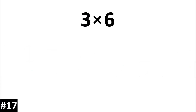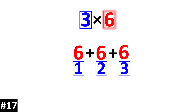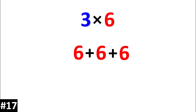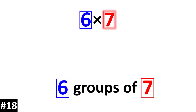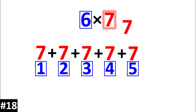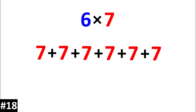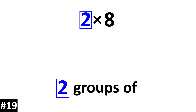3 times 6 is the same thing as 3 groups of 6. 6 times 7 is the same thing as 6 groups of 7. 2 times 8 is the same thing as 2 groups of 8.